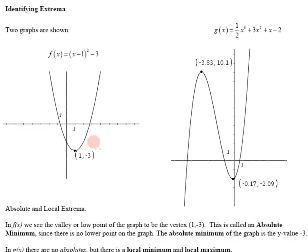Two graphs are shown here. On this graph it goes up and down forever on both sides. On this graph it goes down and then up forever.